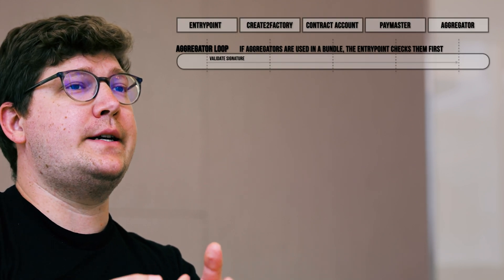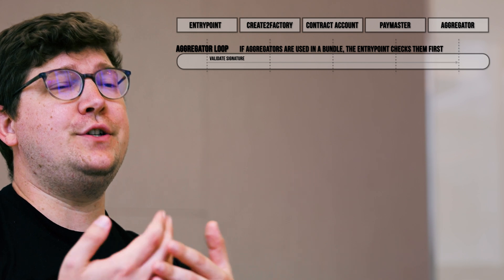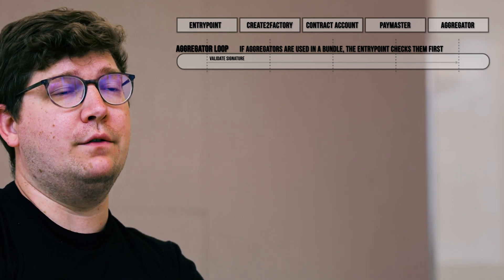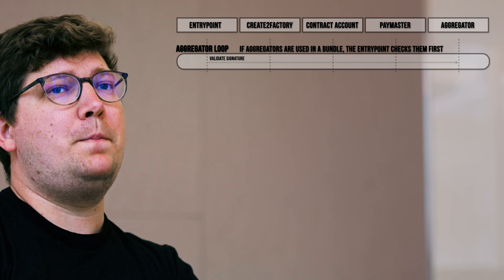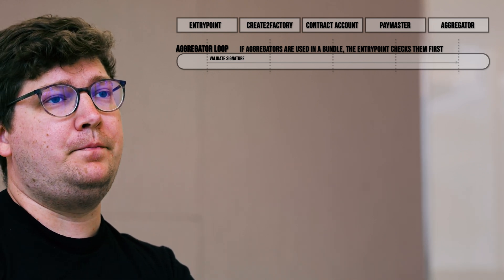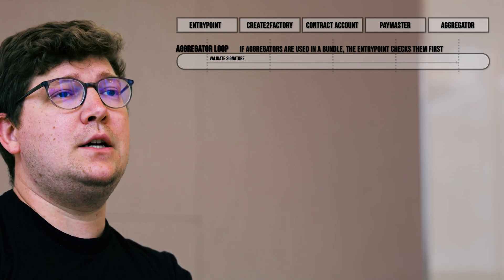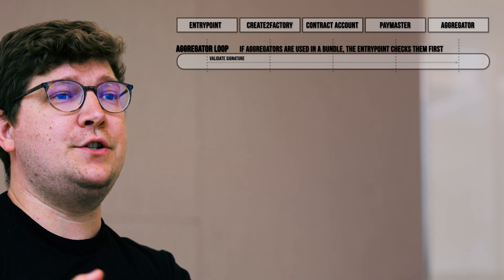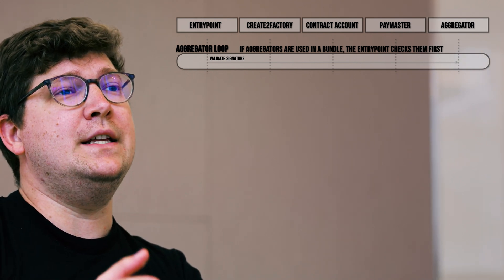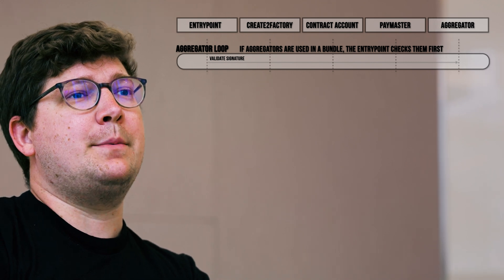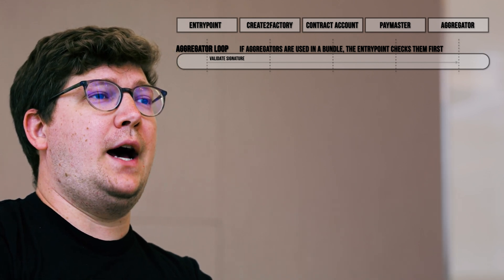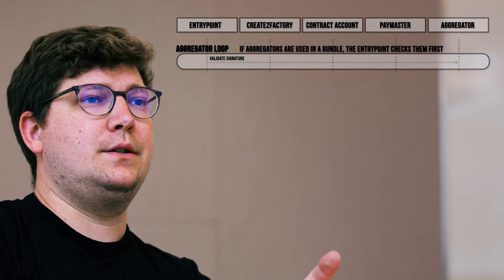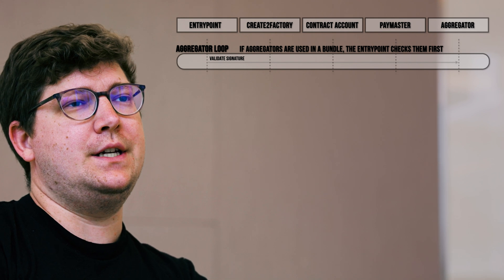The entry point first receives a bundle, and if it contains aggregated transactions — that is, user operations that specify an aggregator to verify signatures — it will first check with each individual aggregator whether the user operations are valid. Then it will go through and check each of the individual user operations one at a time to verify that each one in the bundle will be accepted. This is part of the reason why a bundler does simulation: to ensure that the entry point accepts all user operations in the bundle it submits.